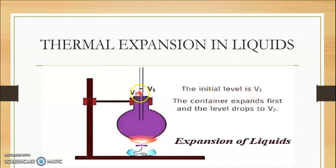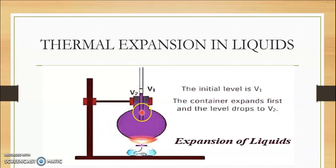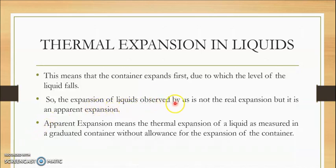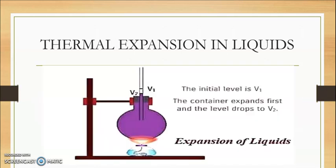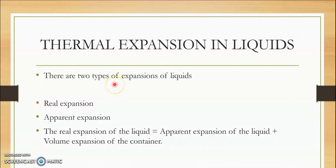Looking at the diagram: this is the initial level L1. When we apply heat, the container expands and the water level drops to L2. Then as heat reaches the liquid, it expands and the level rises. The expansion we observe is not the real expansion — it is an apparent expansion. So we have two types of expansion: real expansion and apparent expansion.